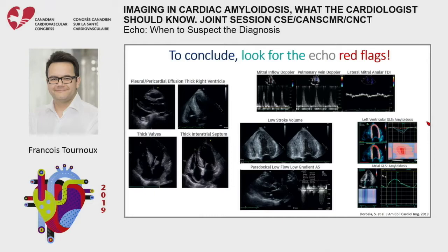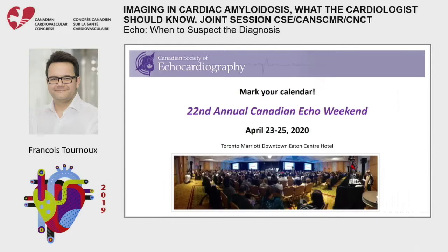To conclude: look for all these echo red flags — pericardial effusion, thick right ventricle, thick valves, thick interatrial septum, diastolic function, systolic function, low stroke volume, the cherry-on-top GLS pattern. And when looking at patients with aortic stenosis, have a special focus on those with low-flow, low-gradient aortic stenosis. Thank you very much.